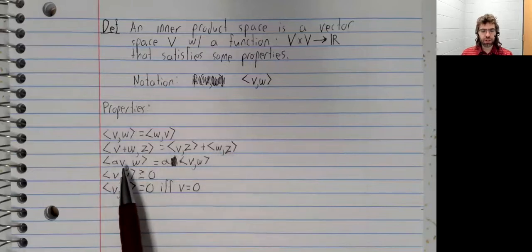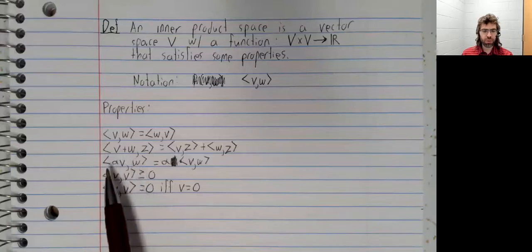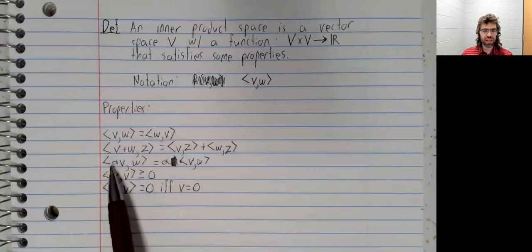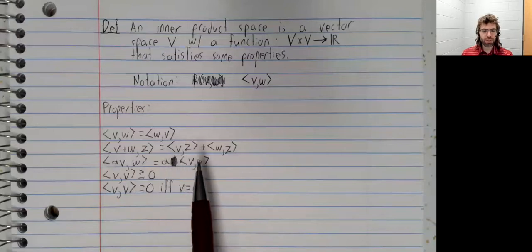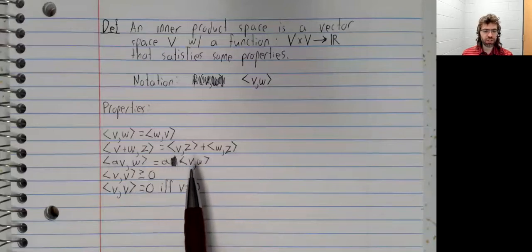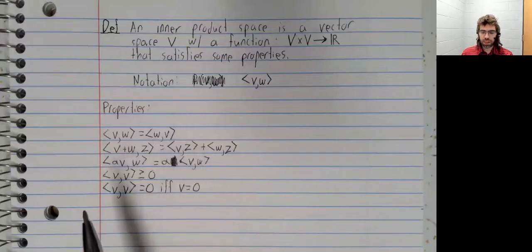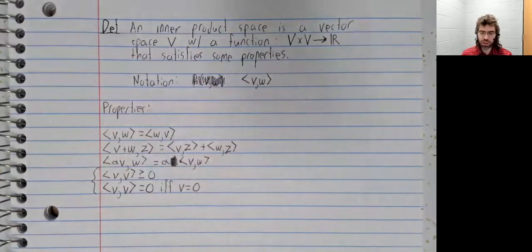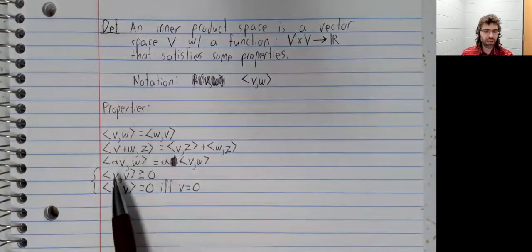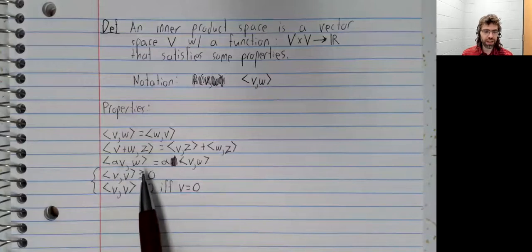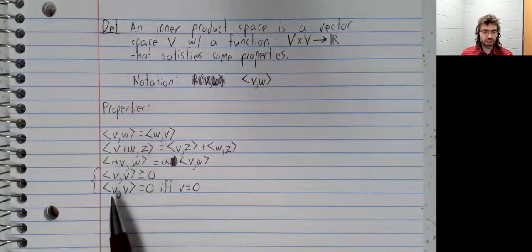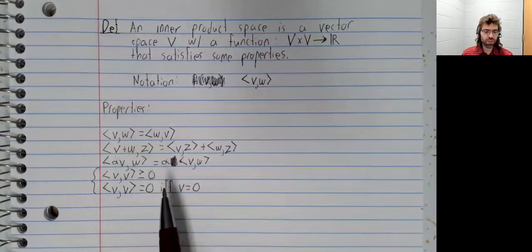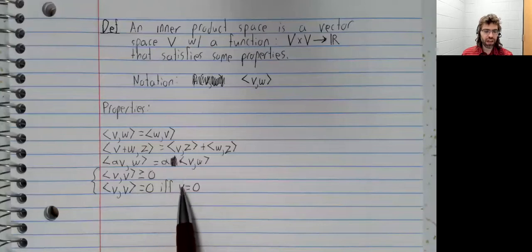The inner product of alpha V and W, where alpha is a scalar, is alpha times the inner product of V and W. And these conditions are usually stated as one, but the inner product of any vector with itself is non-negative. And the inner product of a vector with itself is zero if and only if the vector is the zero vector.